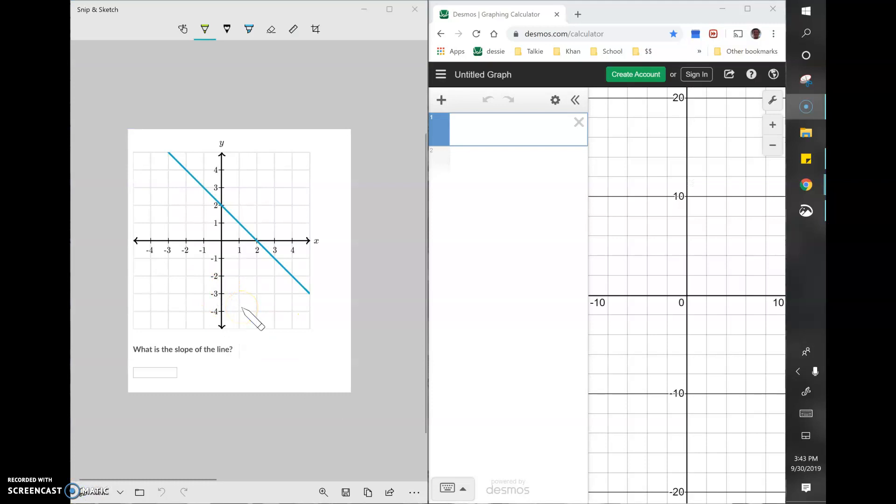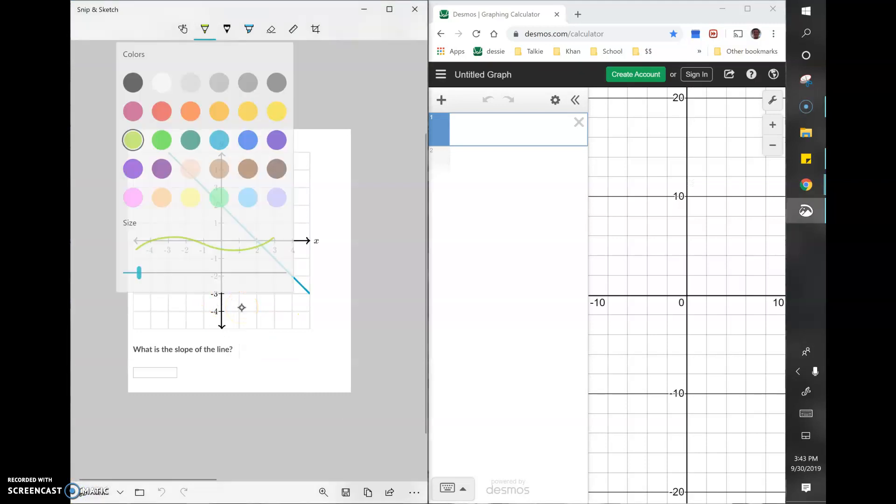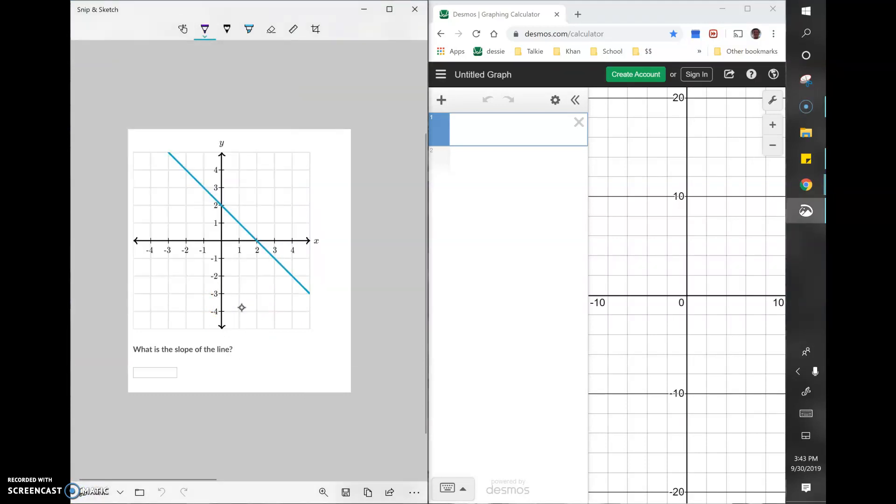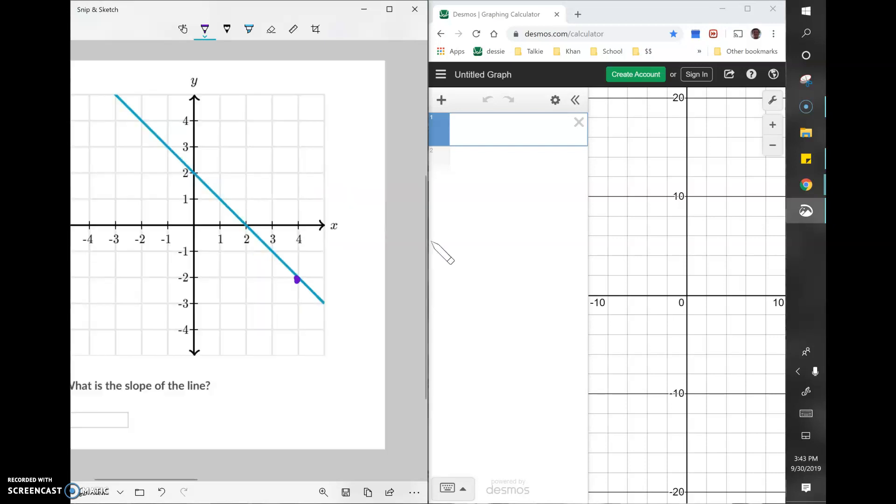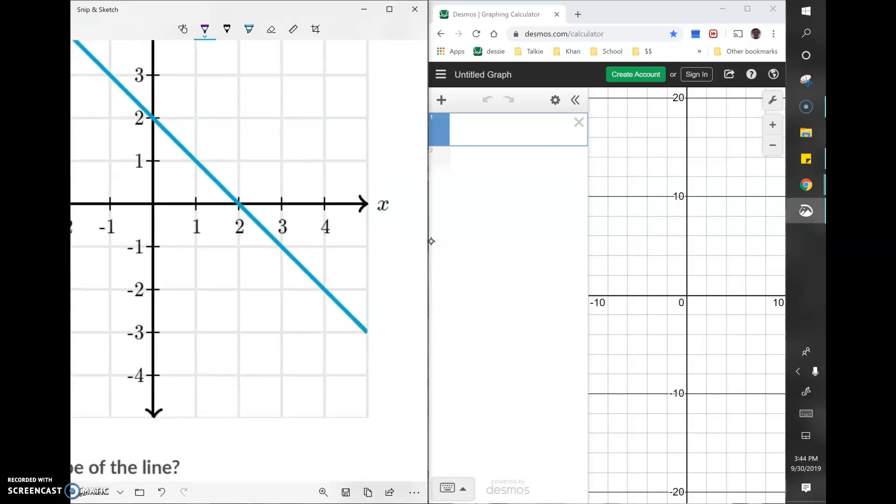Okay, for the second example, we're going to use the Desmos version. So for the Desmos version, all we need to do is deduce two points that we can use and what those coordinates are. So this point goes perfectly to the corner of the square, so we can use this coordinate point. Which would be for the x value, 4, the x value and the y value would be negative 2. So 4 comma negative 2.